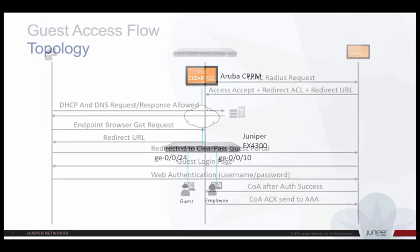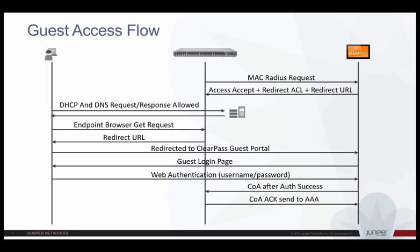All access ports on the switch are configured to authenticate endpoints using MAC auth if there are no EAPOL packets from the endpoint. Since the guest user laptop is not configured for 802.1x, MAC authentication is initiated by the switch for this endpoint. CPPM notices that this is an unknown endpoint and sends an Access-Accept with web redirect information to the switch, redirecting the endpoint to the ClearPass guest authentication page. As part of the RADIUS response packet, the CPPM server also sends an ACL which allows access to some resources, for example DHCP and DNS access.